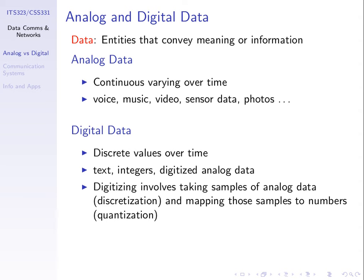Examples of analog data: voice — when someone's talking; music — someone's playing an instrument; video; sensor data — for example, a temperature sensor continuously receiving inputs which are the temperature of the room. We can even think of images: when we take a photo with an old-style camera, there are continuous changes in the light hitting the camera sensor. A lot of our data comes in analog form.